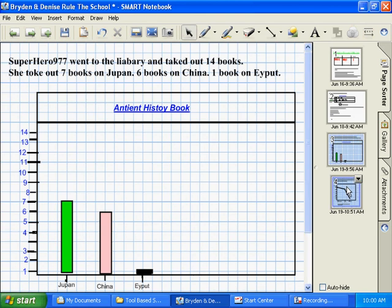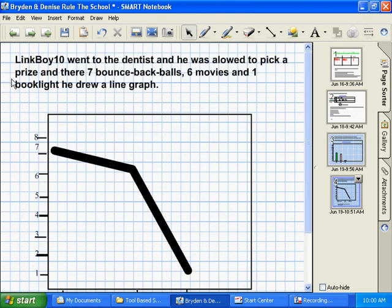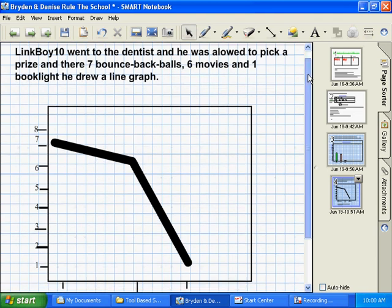And now, we've come on to a line graph. And we have put on a little data here, such as, Link Boy 10 went to the dentist, and he was allowed to pick a prize. And there were seven bounce-back balls, six movies, and one book light. He drew a line graph once he chose his prize.